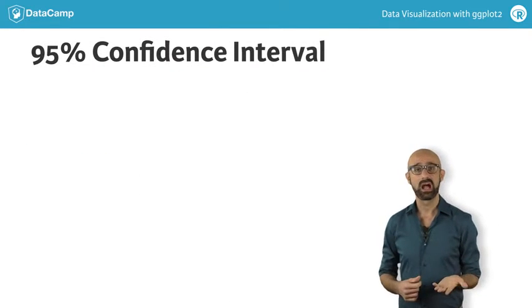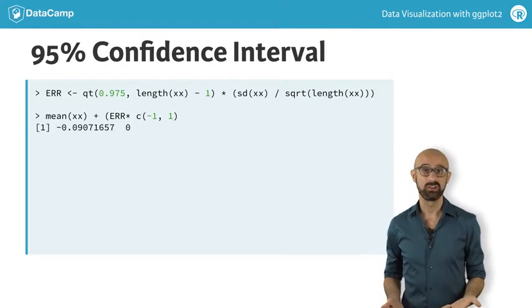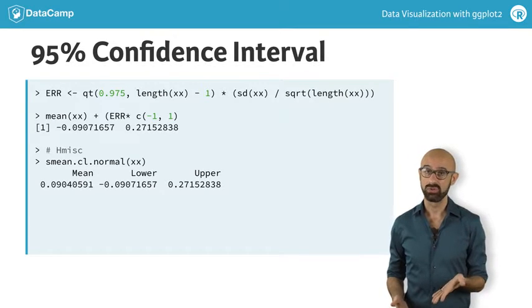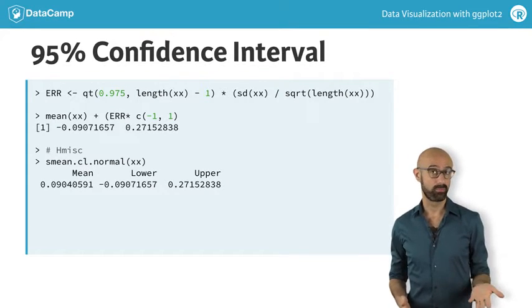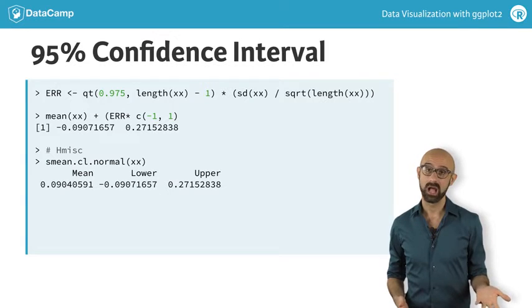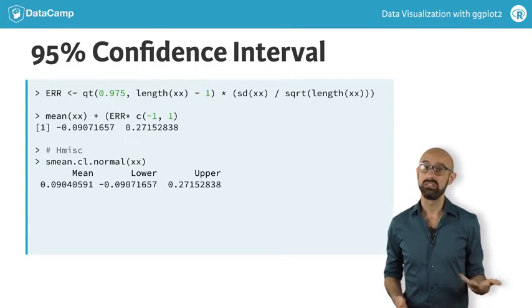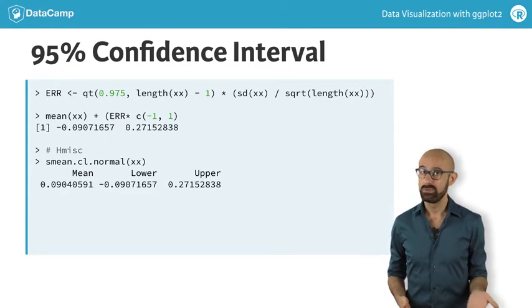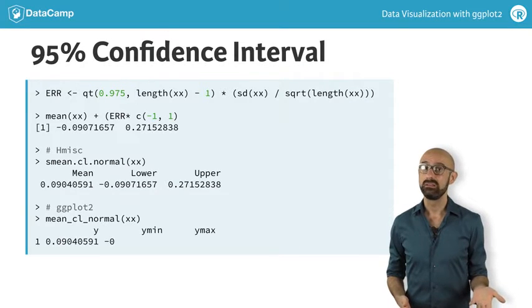The 95% CI is also straightforward. The hmisc function, smean.cl.normal, returns the mean and the upper and lower bounds of the 95% CI, which is calculated using the t distribution, and can likewise be called from within ggplot2 using mean_cl_normal.